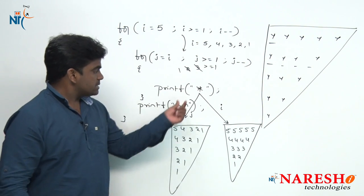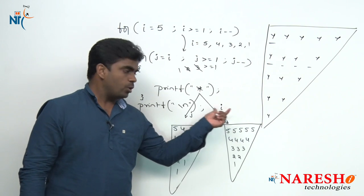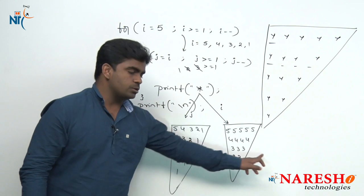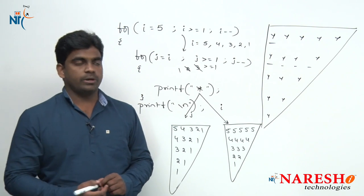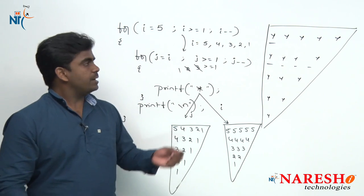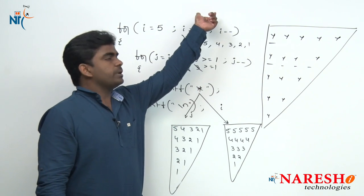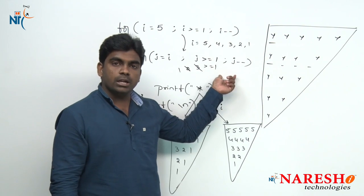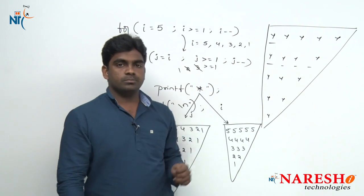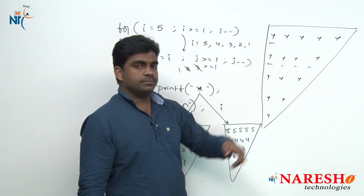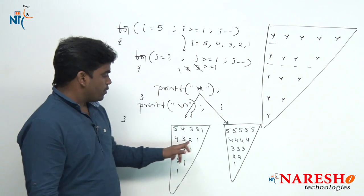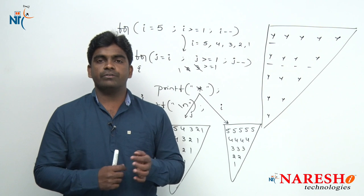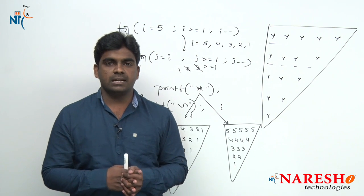So instead of printing stars, if you print I value or J value, different patterns will print. These patterns are very very important from the interview point of view. If you use increment operator in the outer loop and decrement in the inner loop, or vice versa — what patterns result and how to print the same pattern — we will see in the next session. For more videos please subscribe to Naresh IT channel. Thank you.